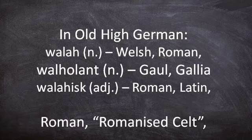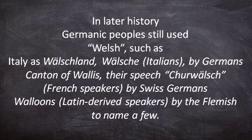I really need to emphasize that — because to focus on the fact that this term can mean 'foreigner' would be a mischaracterization of what this word actually means. In later history, the Germanic peoples throughout Europe still used this term Welsh. Italy was known as Welschland, and by extension Welschia would refer to Italians by the Germans. We have the cantons of Wallis and their speech of Krua-Welsch, referring to French speakers, a term used by the Swiss Germans. And we have Wallons — a reference to Latin or Latin-derived speakers, employed by the Flemish.